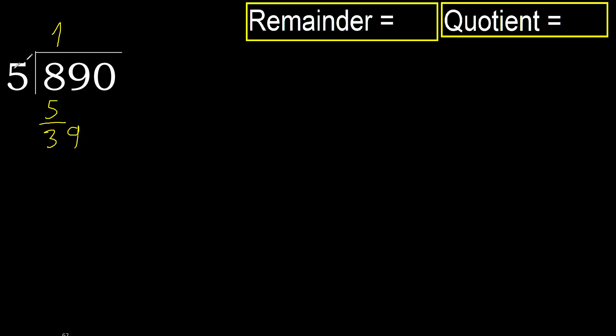39: 5 multiplied by 8 is greater. Multiplied by 7 is 35 — is not greater, ok. Subtract: 39 minus 35 is 4.